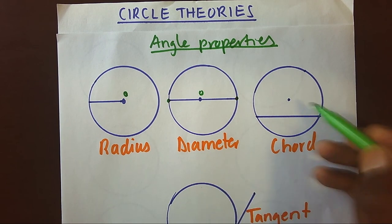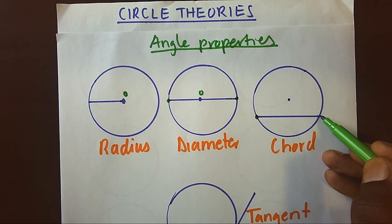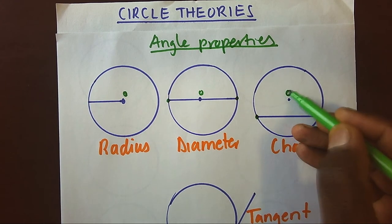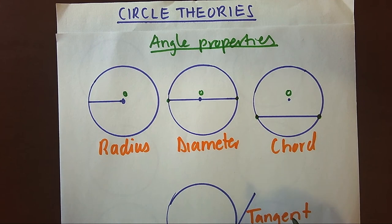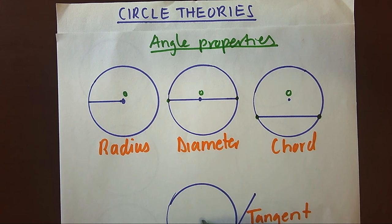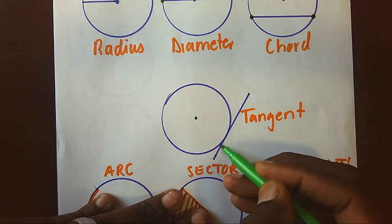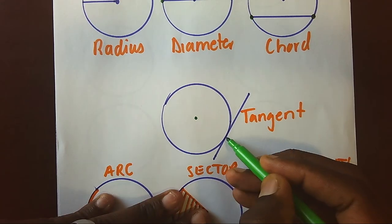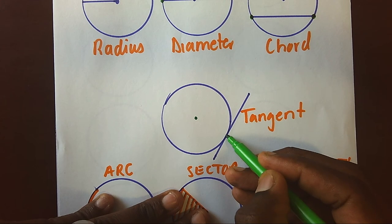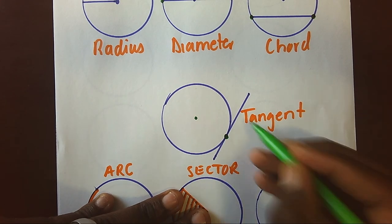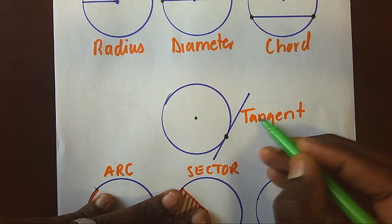And if we have a straight line from one end of the circle to another end of the circle but not touching the center, we call it a chord. However, when we have a straight line just touching the circle at only one point, we call that one a tangent.